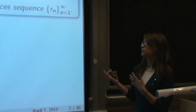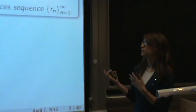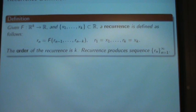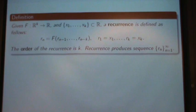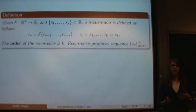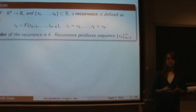To start off so that we're all on the same page, let me define what I mean by a recurrence. We're given some function f that takes in k real numbers and returns one real number, and then we have k additional real numbers. From that, we define a recurrence by saying that r sub n equals f applied to r sub n minus 1 down through r sub n minus k. This recurrence requires k values to compute the next value, so we say its order is k.